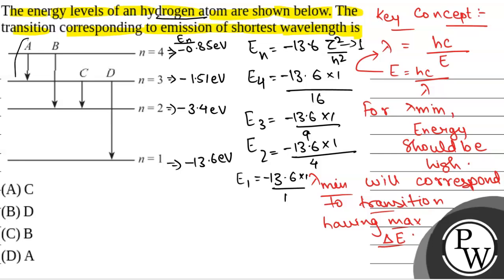Now we will compare transitions. For transition A, the energy change is from -0.85 to -1.51. For transition B, the energy change is from -0.85 to -3.4. For transition C, the energy change is from -1.51 to -3.4.